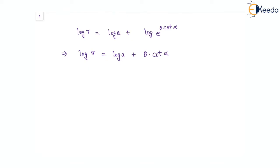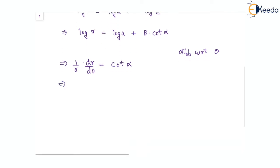Differentiating with respect to theta, we get one by r times dr by d theta equals cot alpha, since log a is constant and the differentiation of theta is simply one. From here we can say that r₁ is r times cot alpha.